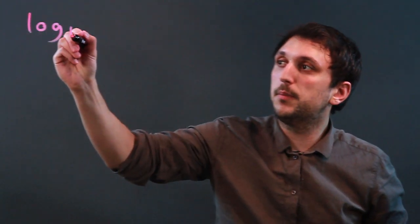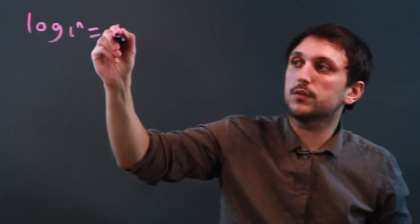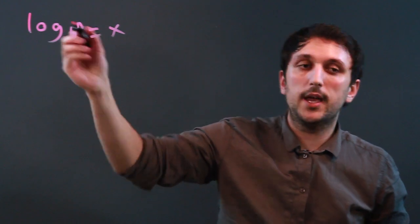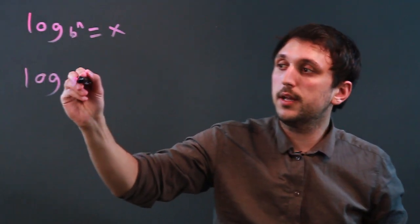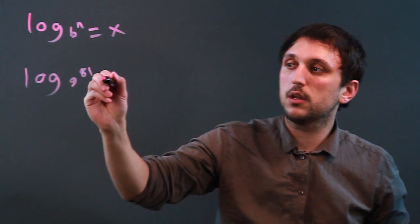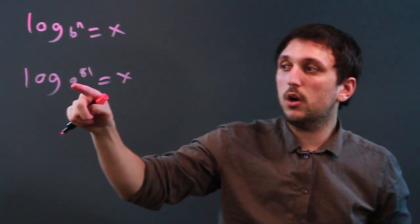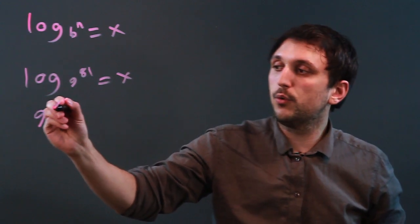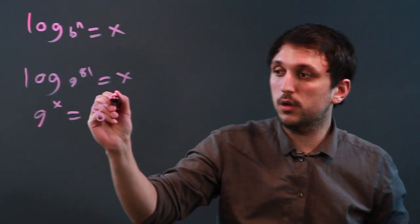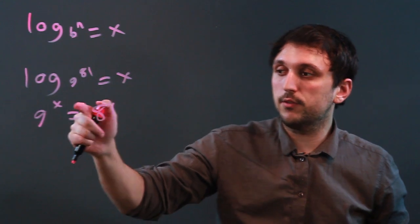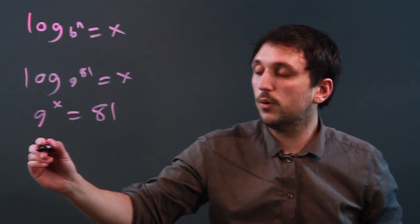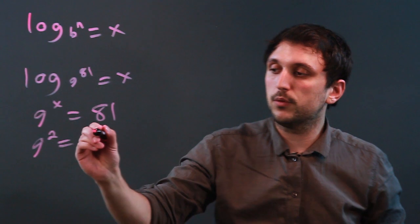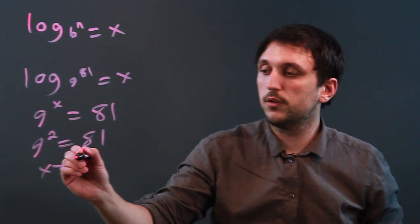So when we talk about the base of 9, we're talking about logarithms, and think about it as log base b of n equals x. And if we say log base 9 of 81 equals x, all you have to really do is flip the 81 and the x, and we say 9 to the what equals 81? 9 squared equals 81. So 9 to the 2 equals 81, which means x equals 2.